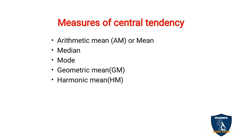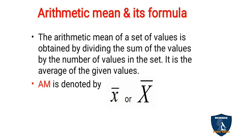In this video, I am going to exclusively discuss mean for grouped data and mean for ungrouped data or raw data. In mean for grouped data, we have discrete series and continuous series. So let's see one by one in detail. First is arithmetic mean and its formula. The arithmetic mean of a set of values is obtained by dividing the sum of the values by the number of values in the set.